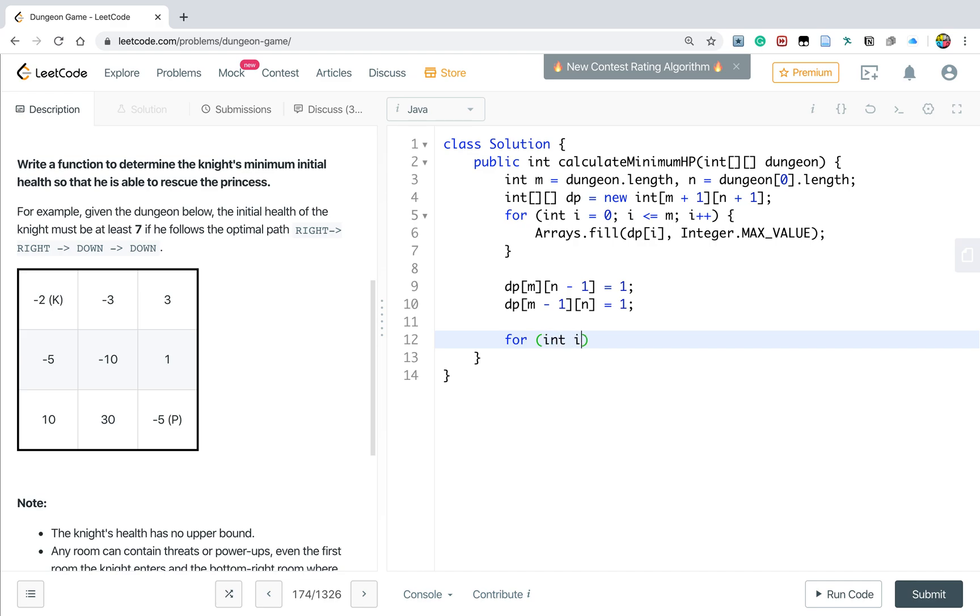And then we start from n-1, i greater or equal to 0, i minus minus. And for int j, j equal to n-1, j greater or equal to 0, j minus minus.